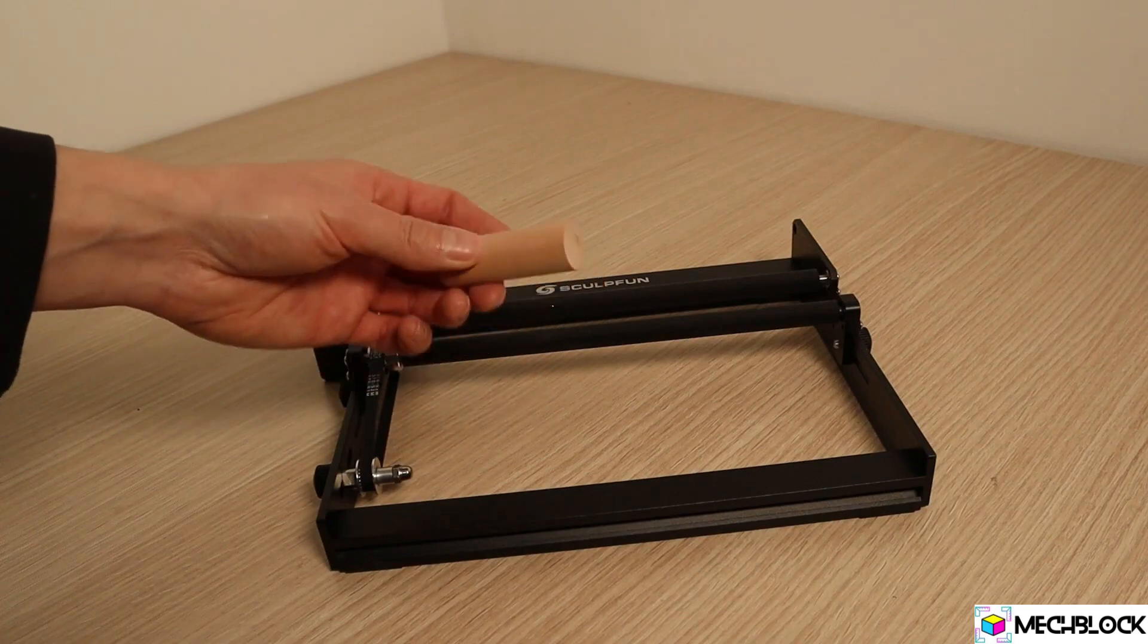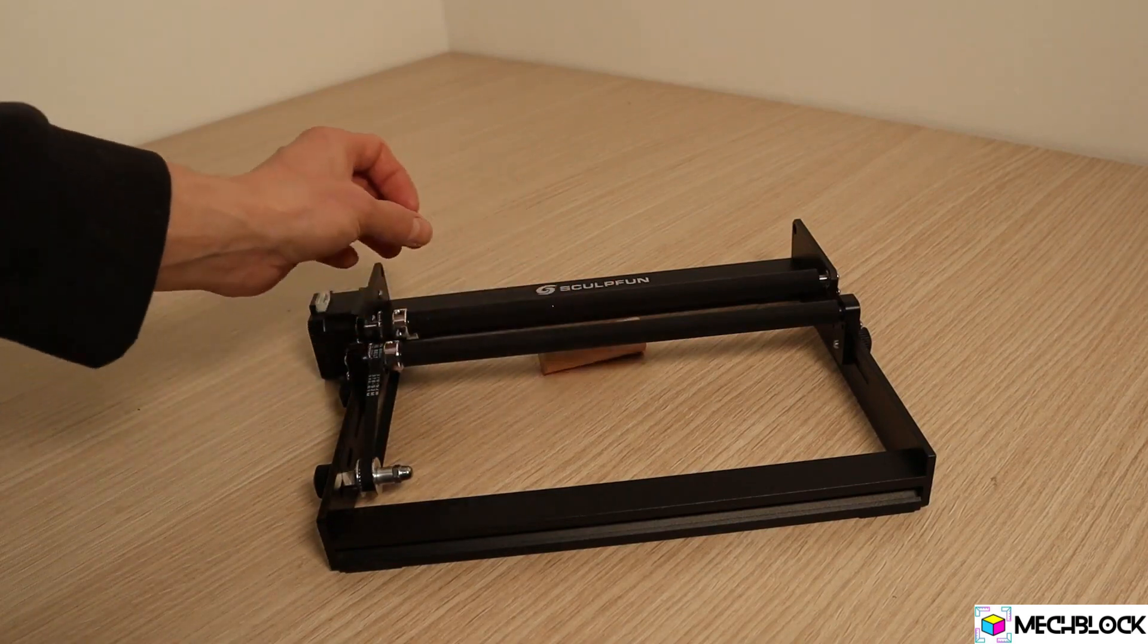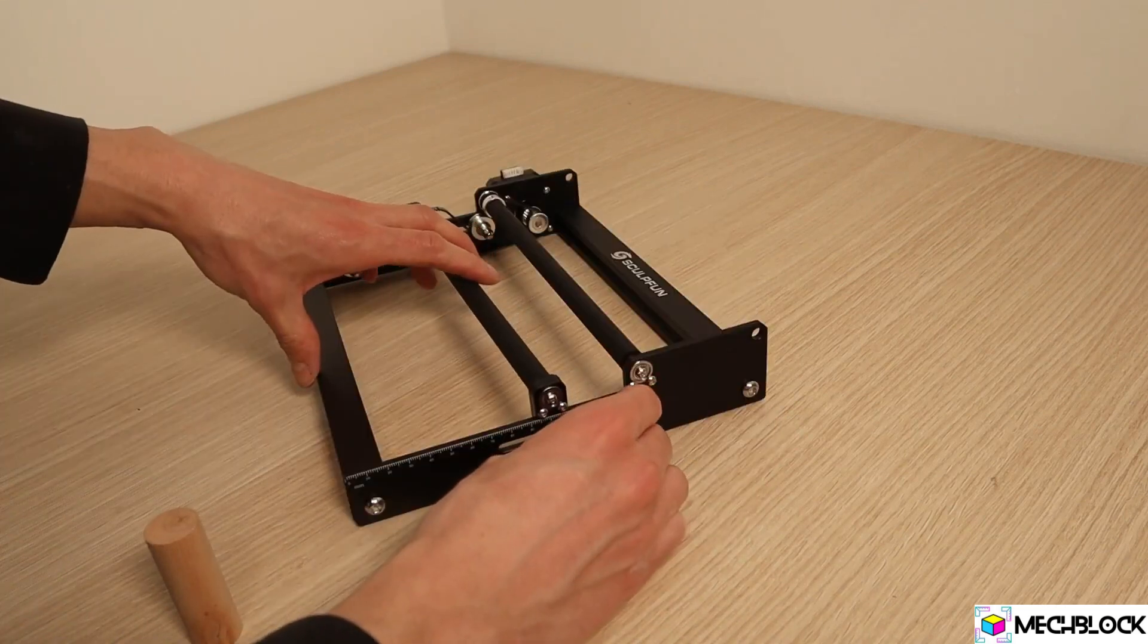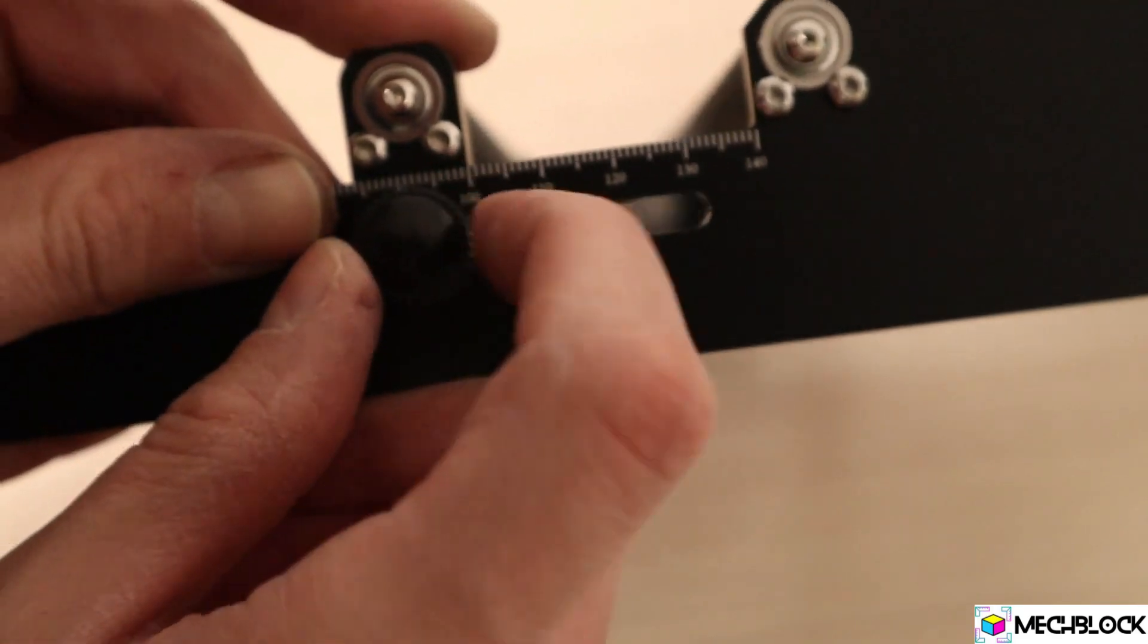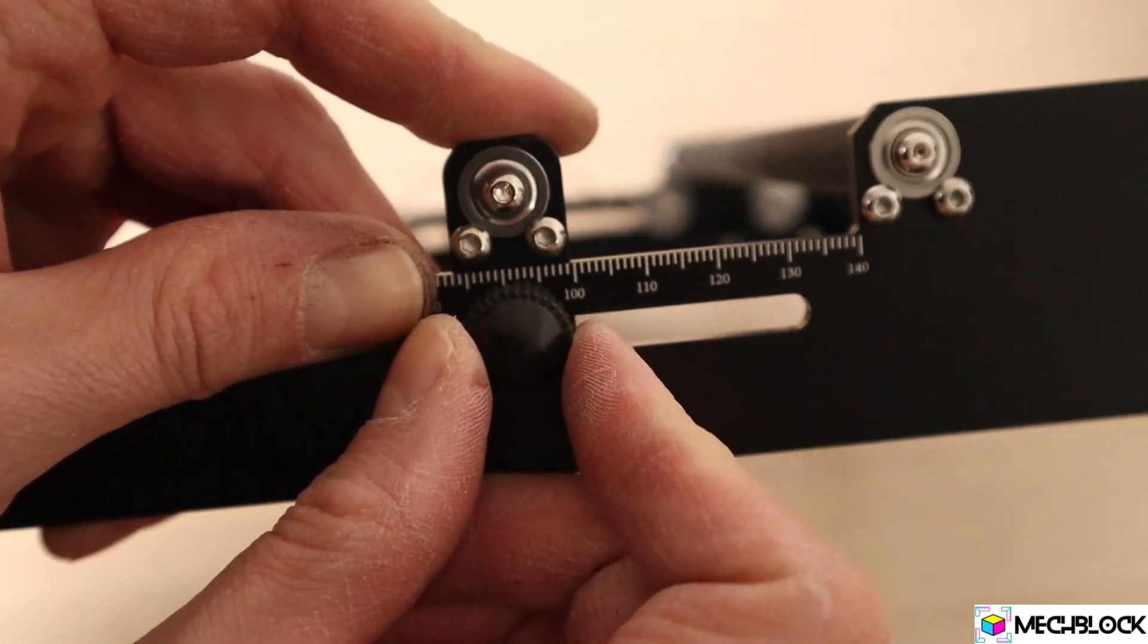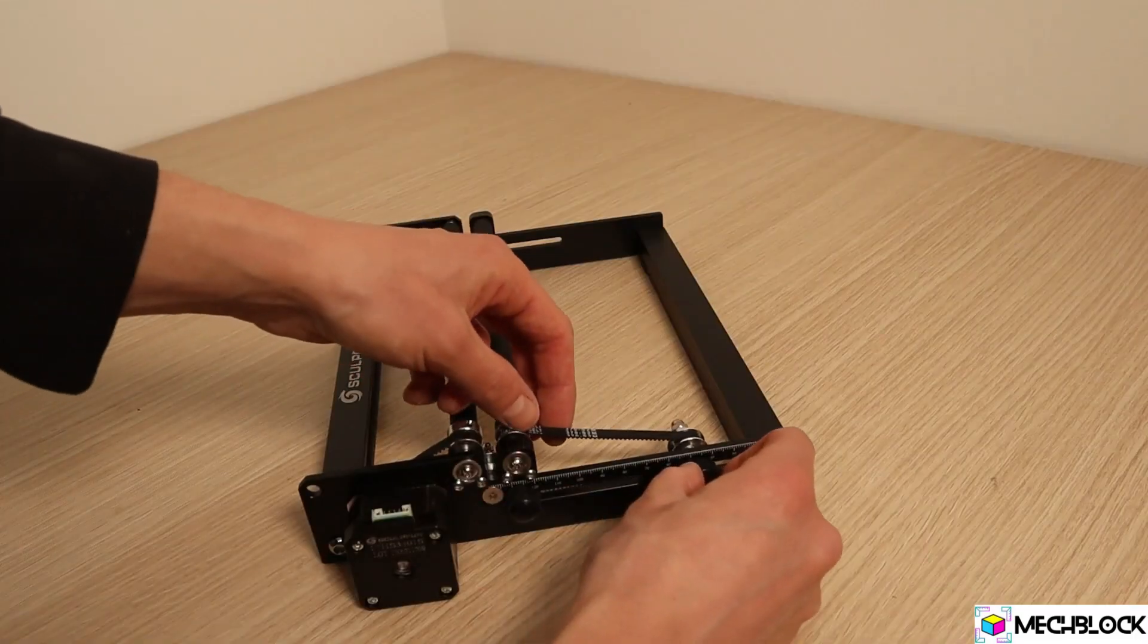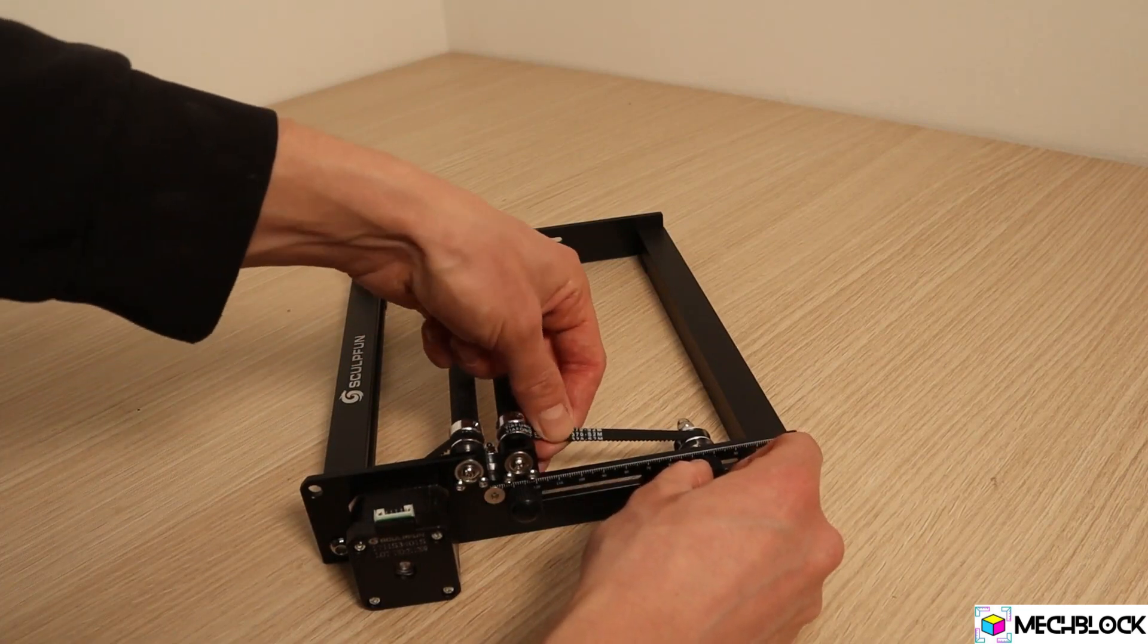Adjusting the rollers is easy. First, you need to release the roller and tensioner and slide the roller to the position you want. Use the scale lines on both sides to make sure that the rollers are parallel. And lastly, tighten the belt tensioner.